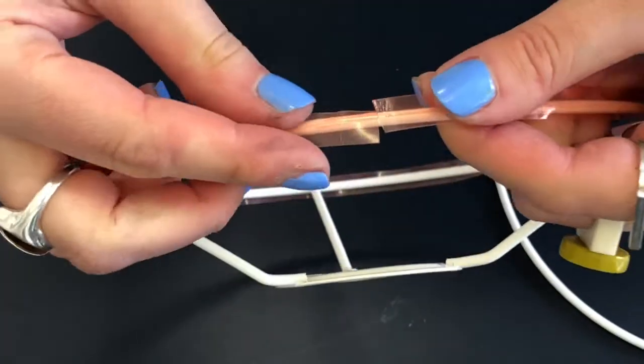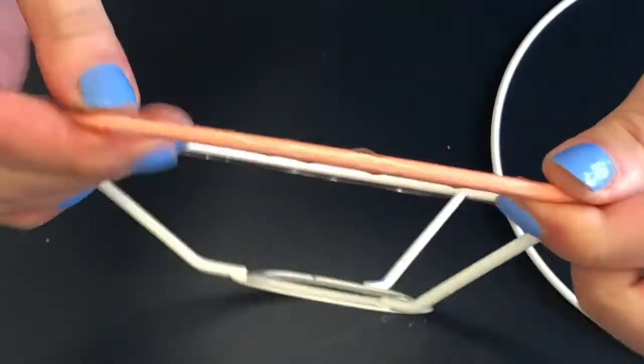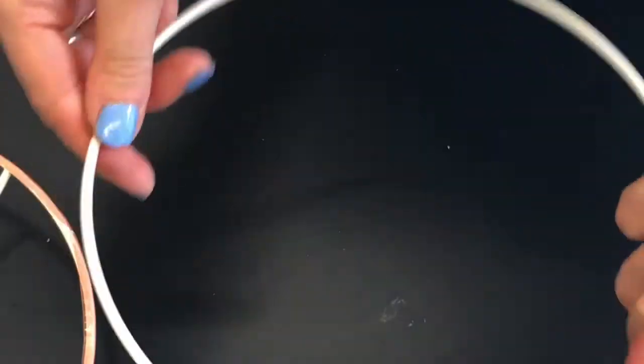Now with my finger and thumb, I'm just going to squidge round that tape so it covers more of the ring. Now I'm going to do the same with the other one.